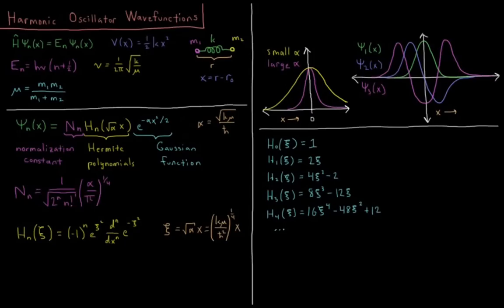This video will discuss the wave functions of the harmonic oscillator. So we have our Schrödinger equation, H psi equals E psi, so in order to solve that we needed to specify a potential energy function for our system.